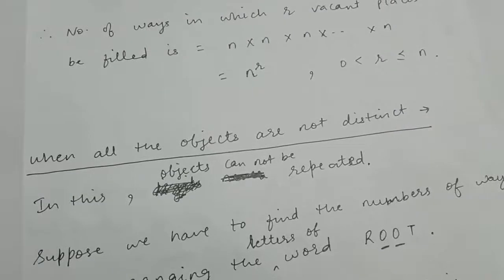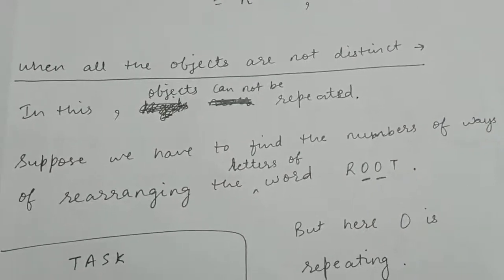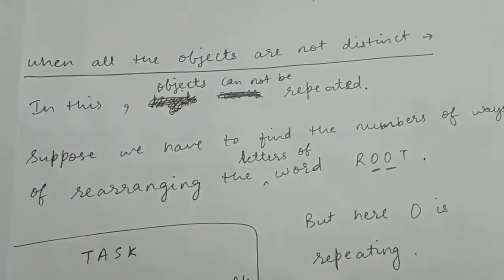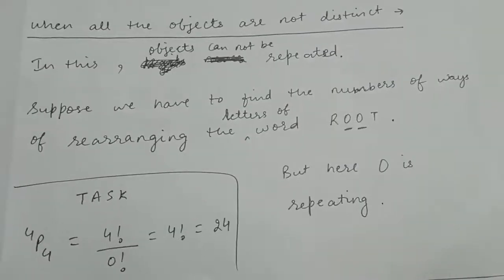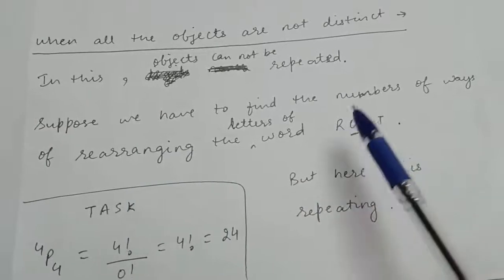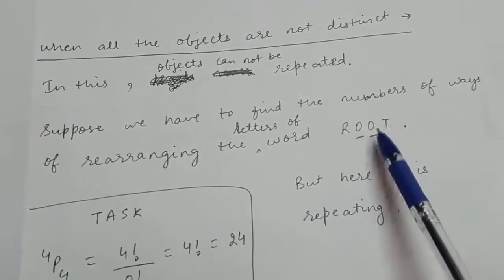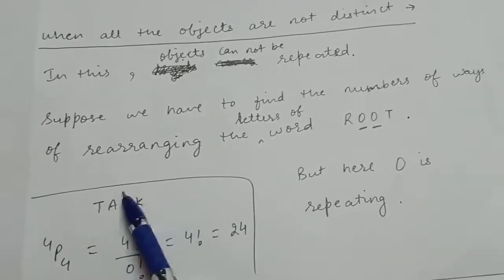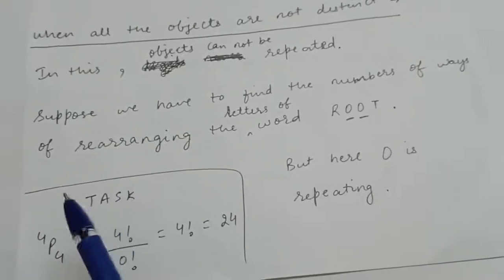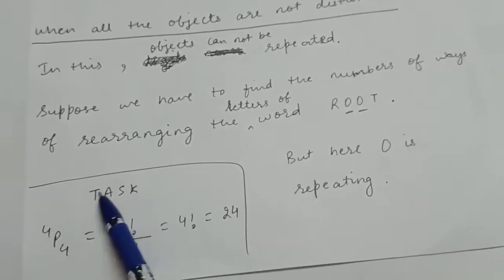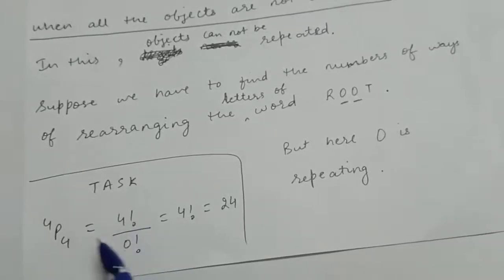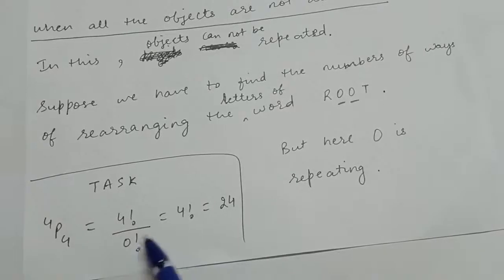Now the second case is when all objects are not distinct. Here there is only one case: objects cannot repeat. For example, to rearrange the letters of the word ROOT — the objects are not distinct because O repeats twice. Compare this with the word TASK where all objects are distinct, so the number of arrangements is 4P4 = 4!/0! = 24.